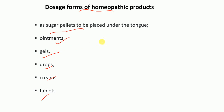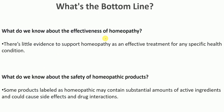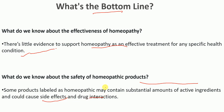Regarding the science, there is very little evidence that supports homeopathy as an effective treatment for any specific health condition. However, it has been practiced for a long time, which is why it is considered a traditional or alternative system of medicine. Some homeopathic products may contain substantial amounts of active ingredients, which could cause side effects and drug interactions, so caution is advised.